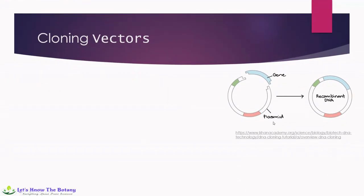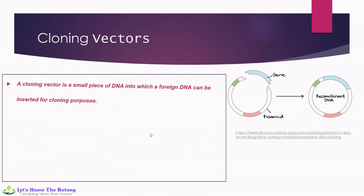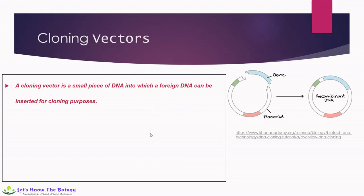In this figure, we may find a plasmid where you can insert a gene of your interest, and from this particular plasmid and inserted gene, you may have made a recombinant DNA. A cloning vector is a small piece of DNA into which a foreign DNA can be inserted for cloning purposes, as shown here where the foreign DNA has been inserted.